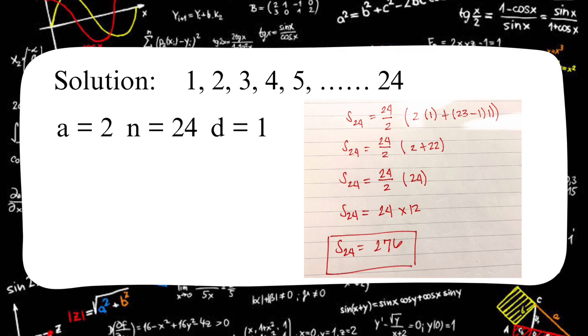After we list the sequence, we will be now getting the a, n, and d variables. A will be the first number in the formula, which is 2. N will be the last number in the sequence, which is 24.